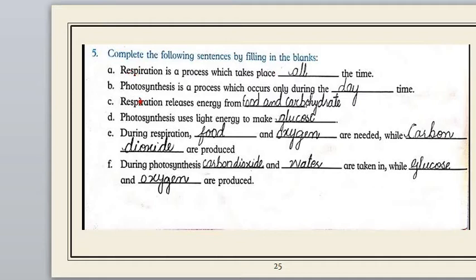The next blank: 'Photosynthesis is a process which occurs only during the __ time.' The correct answer is daytime. Photosynthesis only occurs in the daytime because 'photo' means light and 'synthesis' means to prepare. Plants prepare their food in the presence of sunlight.